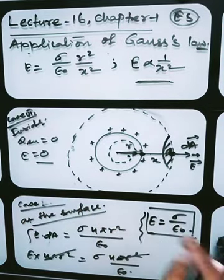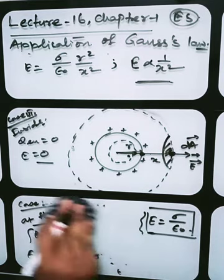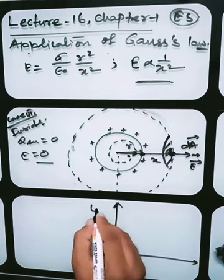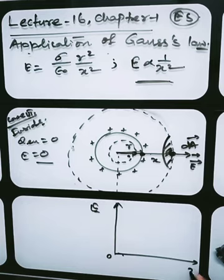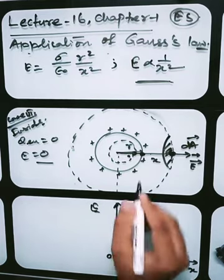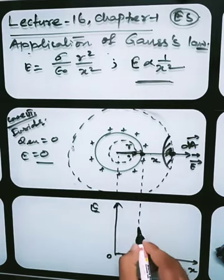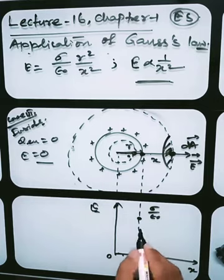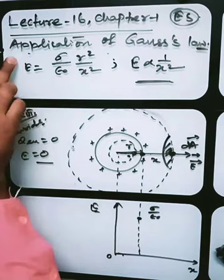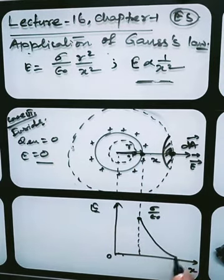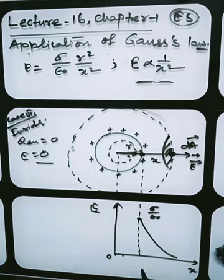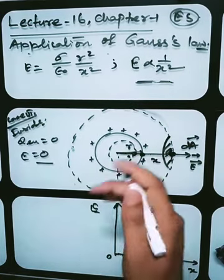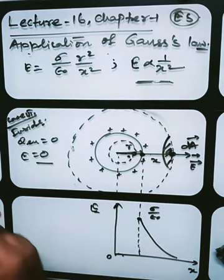Now draw the graph of E versus x from center O: from center to the surface (x < R), the electric field is zero. At the surface (x = R), the electric field jumps to sigma divided by epsilon_naught. Beyond the surface, E decreases inversely with x², following the equation. This is the graph of electric field due to a shell versus separation. In the next lecture we will do numerical questions based on all these applications. Thank you very much.